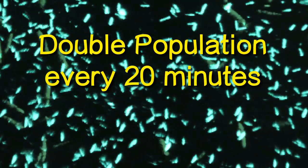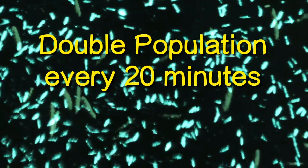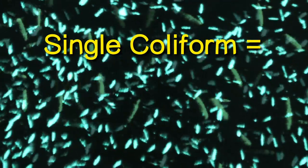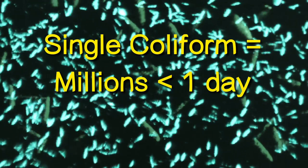In this environment, the bacteria will reproduce at a rate so as to double the population every 20 minutes. This means that a single coliform bacterium could give rise to a population of millions in less than a day.